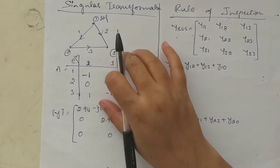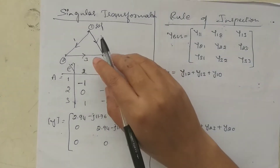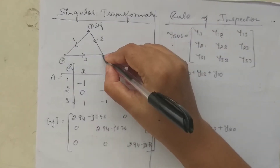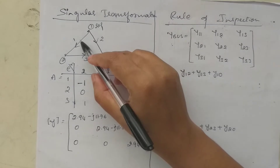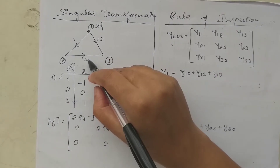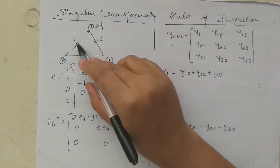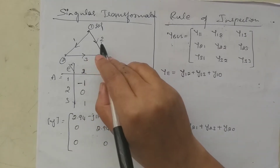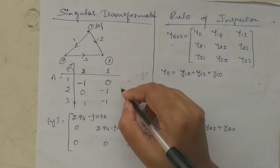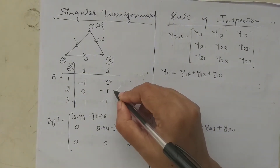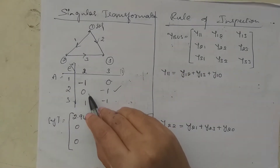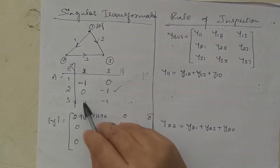We have three nodes: one, two, three. Any one node should be taken as the reference — I am taking the first node as the reference node. Then I draw the oriented graph, taking the direction of each element away from the reference node, labeling elements one, two, three. According to this oriented graph, I will form the bus incidence matrix by deleting the column corresponding to reference node one.